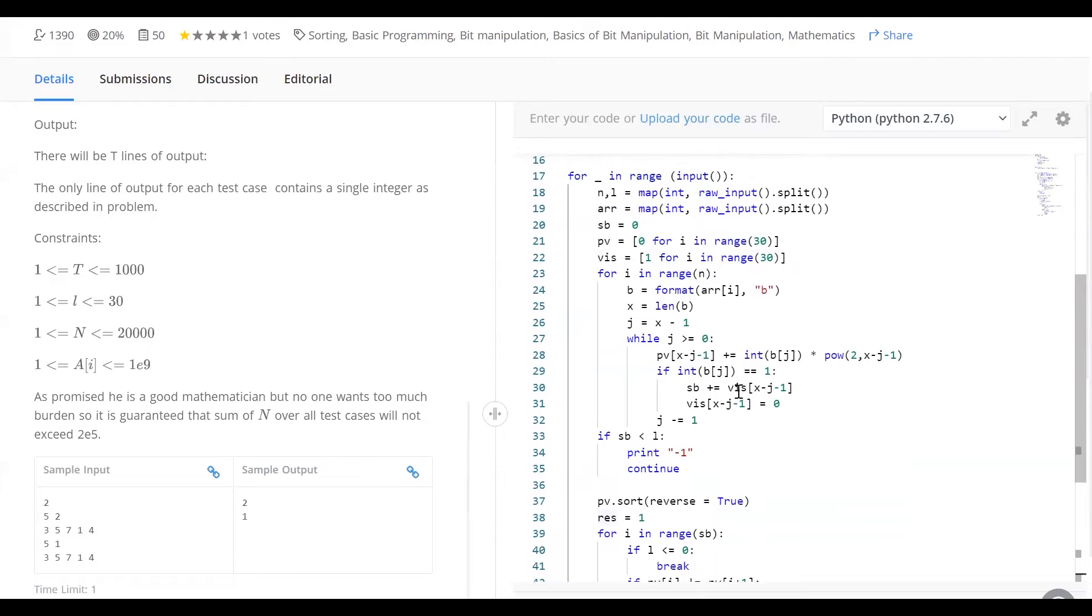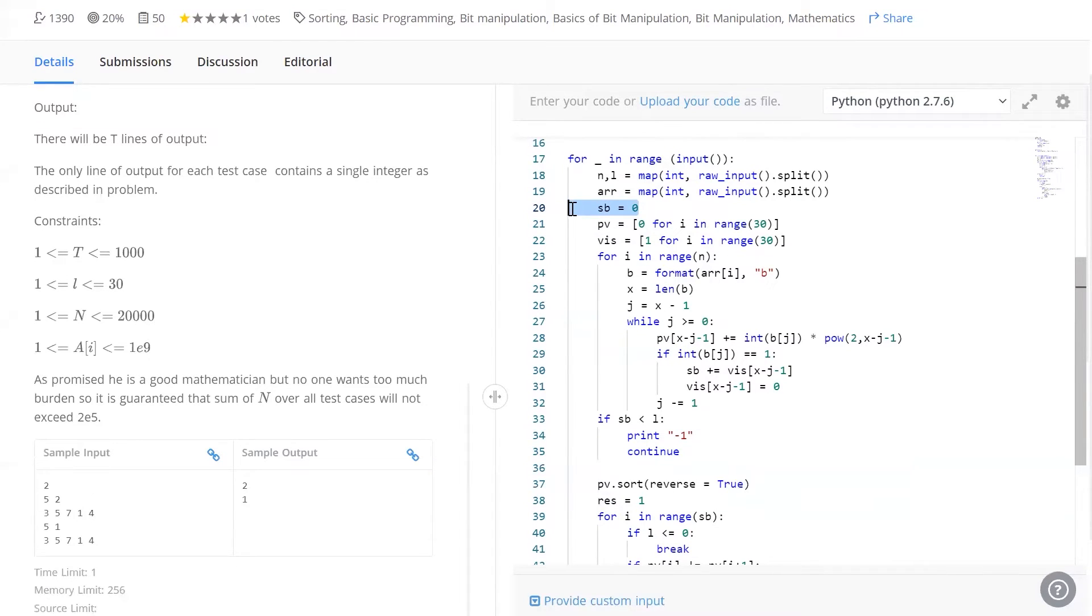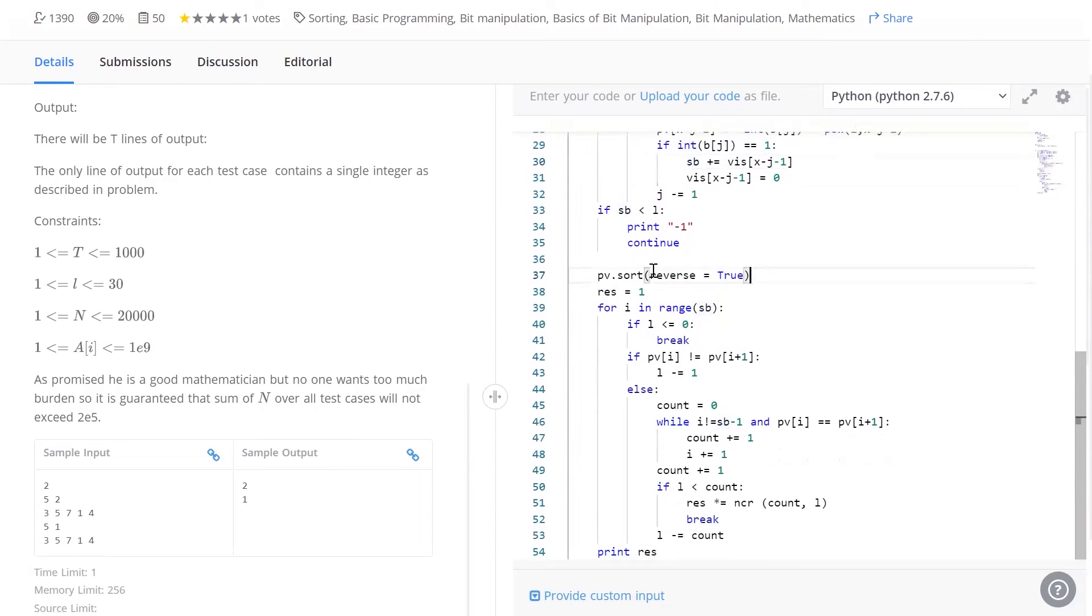Alright guys, this is the code right here. Sb is going to hold the total number of bits that contribute, the total number of bits that can add something to the final answer. In the end, if l is greater than Sb, then we've got to print minus 1. Our result will be infinite. Pv holds our position value and visited is going to be used to help us calculate Sb. This entire loop is going to calculate Sb and Pv. We've also got to sort the position value in order to put the greatest value first. In the examples we've seen, it just so happened that the most significant bits contributed the greatest value. That's not always the case. Let's say our input is 8 followed by 100 ones. In that case, we'd much rather select the ones position because that will contribute a value of 100. That's why we've got to sort it in descending order to ensure we're choosing the greatest value.